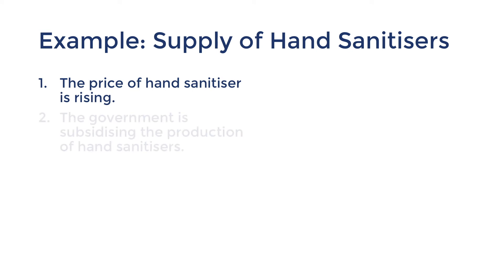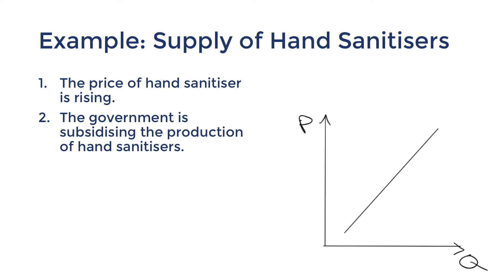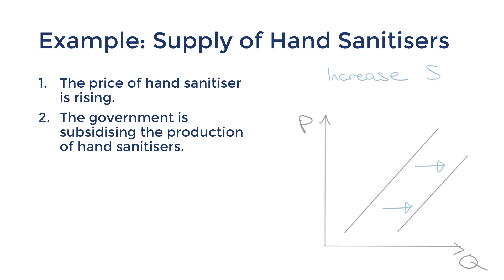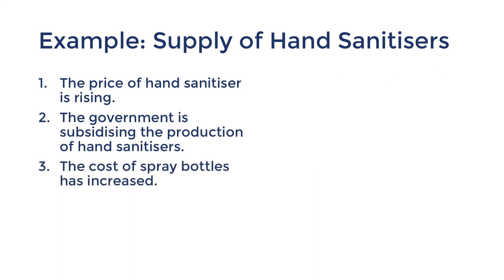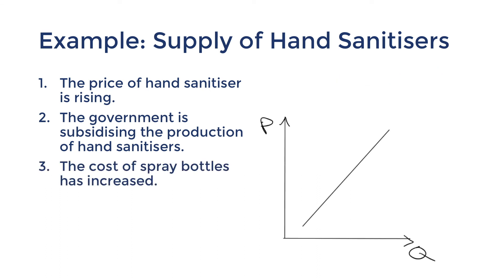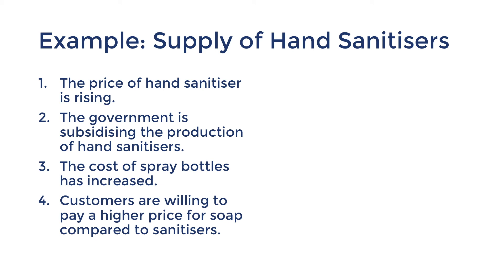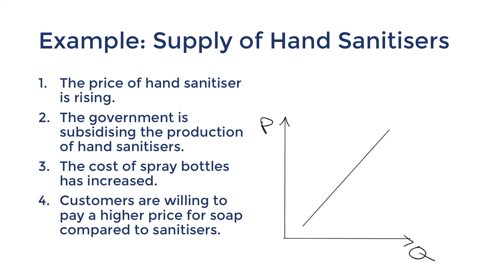Scenario two: the government is subsidizing the production of hand sanitizers. This means the cost of producing hand sanitizer goes down — a shift of the supply curve to the right. Scenario three: the cost of spray bottles has increased. This would increase the cost of production, so the supply curve shifts to the left. Scenario four: customers are willing to pay a higher price for soap compared to hand sanitizers. Producers would shift their resources to soap instead, decreasing the supply of hand sanitizers.